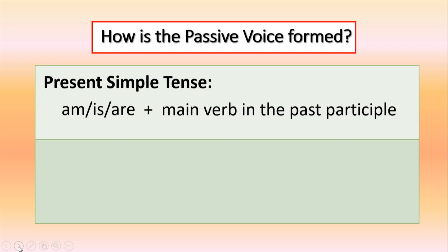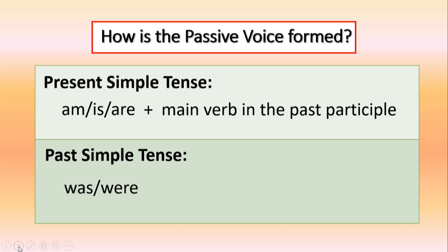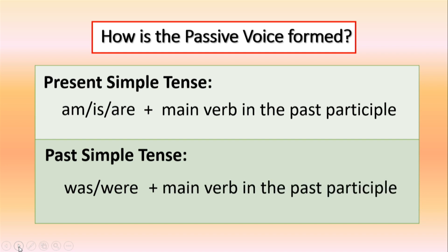As for the passive voice in the past simple tense, it is formed by using the past simple tense of the verb to be — that is, was or were — followed by the main verb in the past participle form.